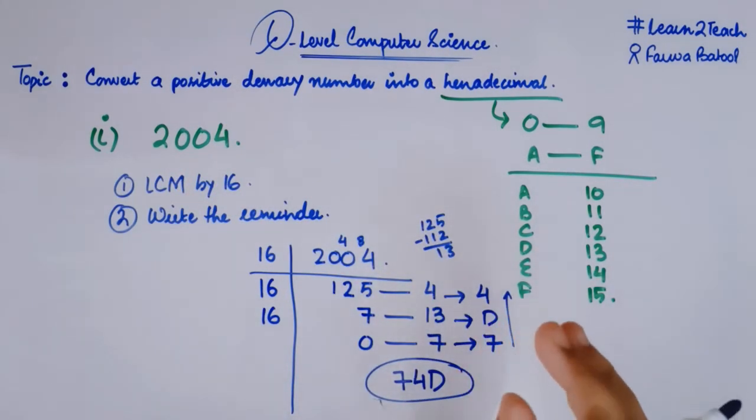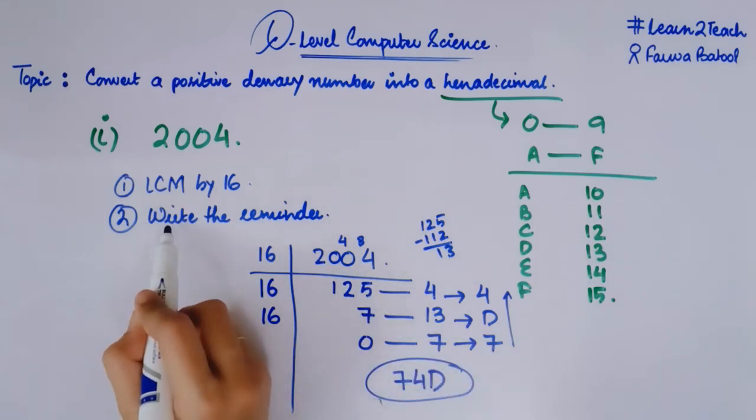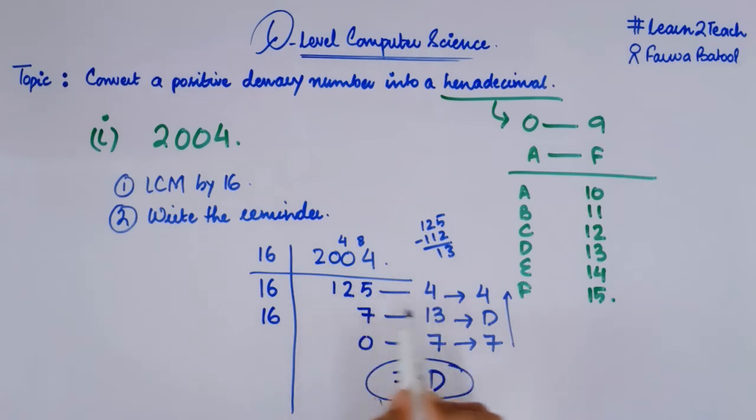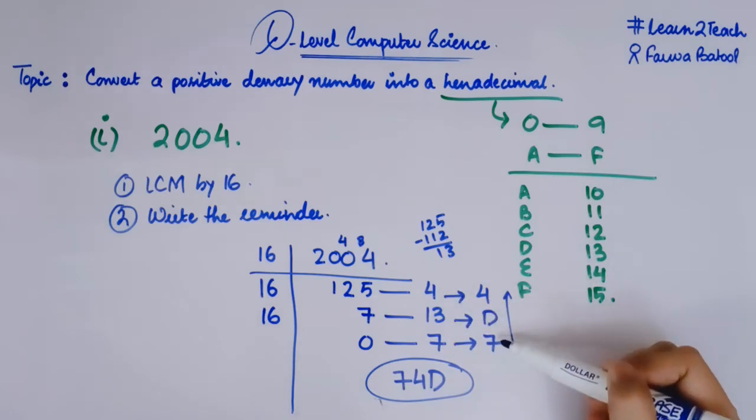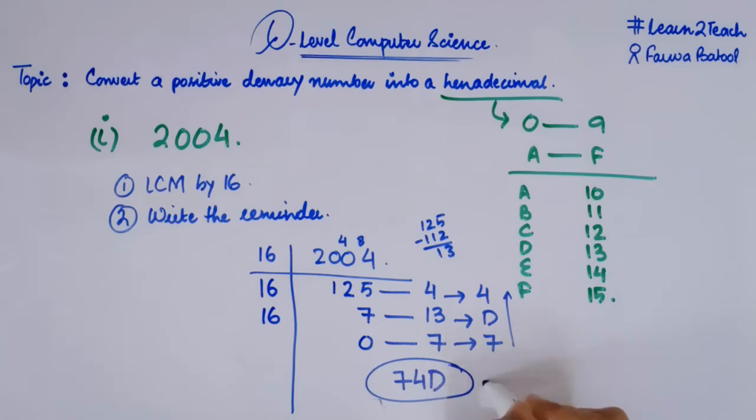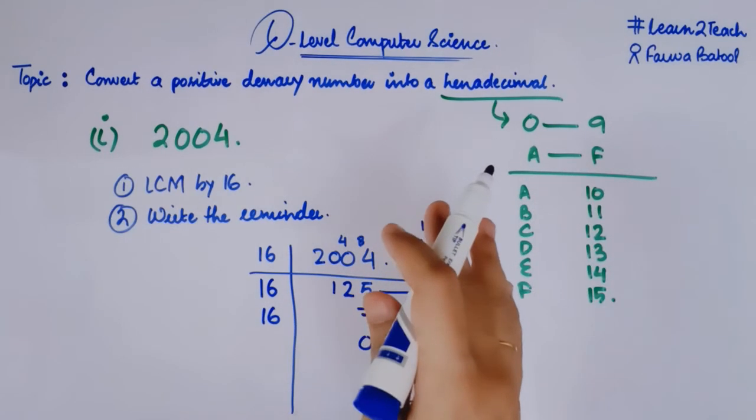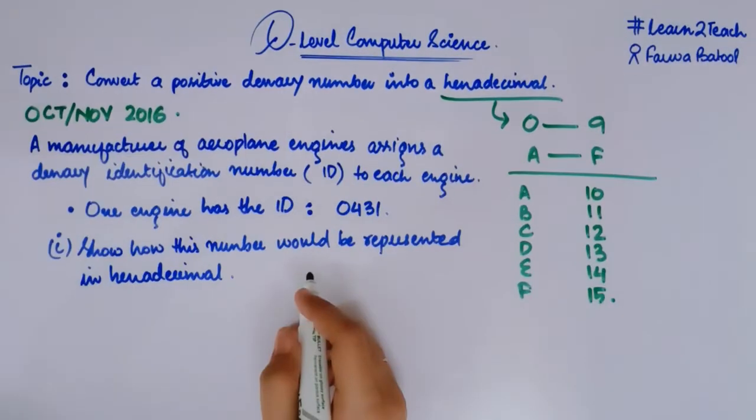Let me repeat the steps again. I have done nothing over here, just taken LCM by 16 until I get a 0. Second would be I have written the remainders at each of these steps. And after doing the LCM, I have converted these digits into their hexadecimal form. And after that, I have just written these remainders in a reverse manner from lower to upward. 7D4 is my required hexadecimal number. Now let me share a past paper example with you so that you can be more clear about the conversion.